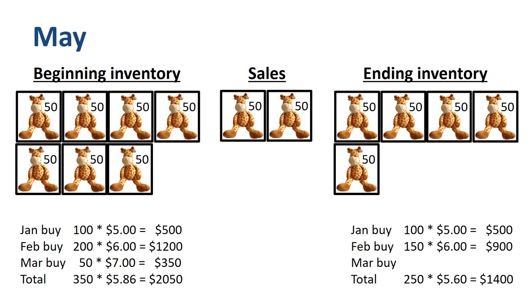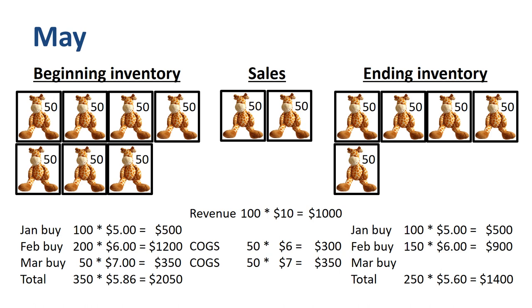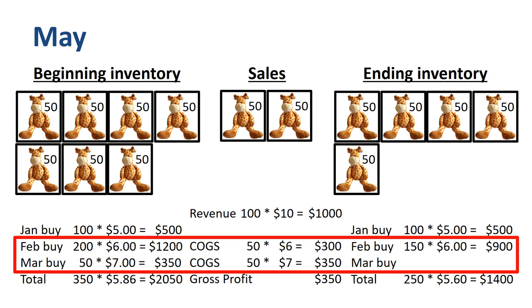If we prepare the income statement for May: revenue is 100 units times $10 is $1,000; cost of goods sold, or COGS, is 50 units times $7 is $350, plus 50 units times $6 is $300; and gross profit is $350. Out of the remaining March buy that was part of the beginning inventory, we took all 50 units to COGS, and we took 50 units from the February buy into COGS. The remaining 150 units from the February buy go to the ending inventory.